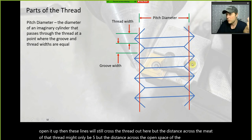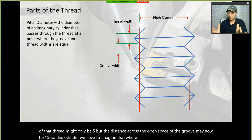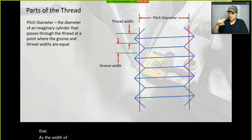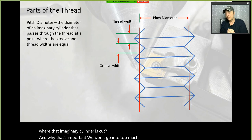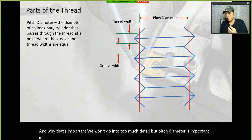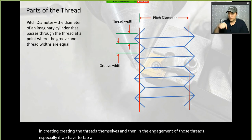We have to imagine that where the cylinder passes through the threads, the thickness of the thread and the width of the open space are identical. Why that's important — a pitch diameter is important in creating threads and in the engagement of those threads.